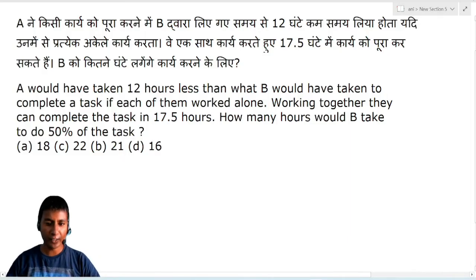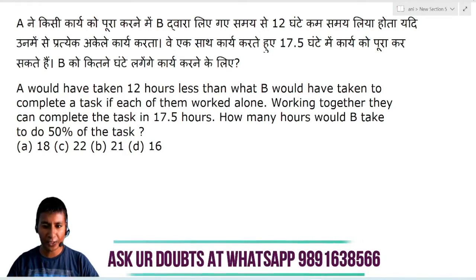A would have taken 12 hours less than what B would have taken to complete a task if each of them worked alone. Working together, they can complete the task in 17.5 hours. How many hours would B take to do 50% of the task?